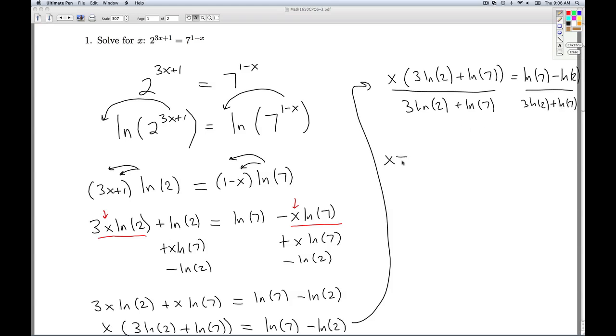And so I get for my final answer, x equals natural log of 7 minus natural log of 2 divided by 3 natural log of 2 plus natural log of 7.